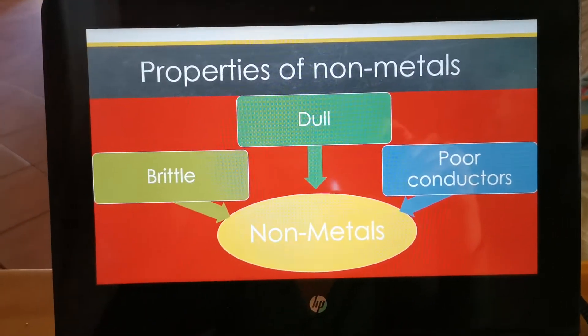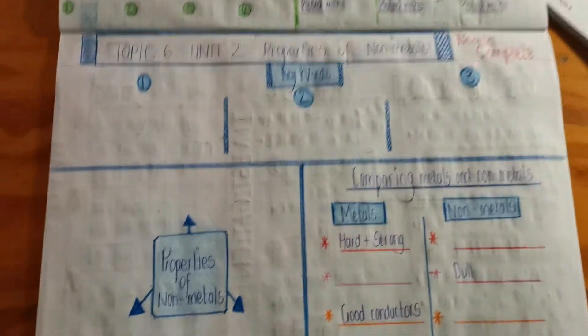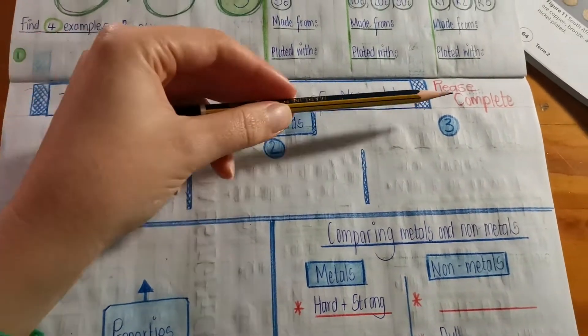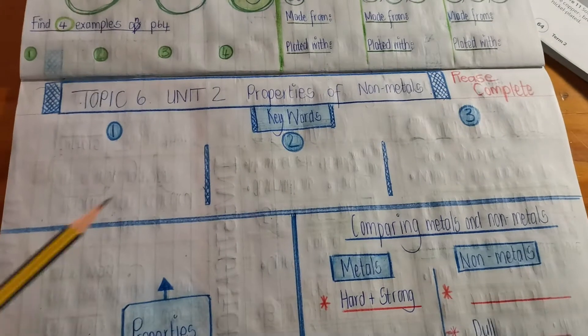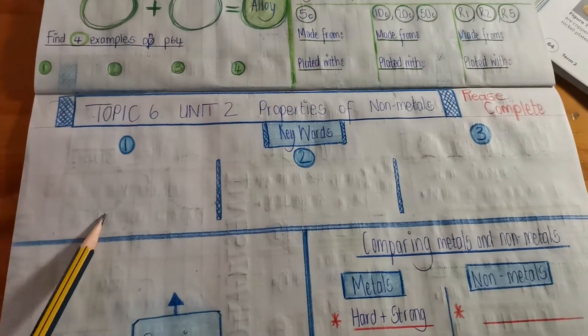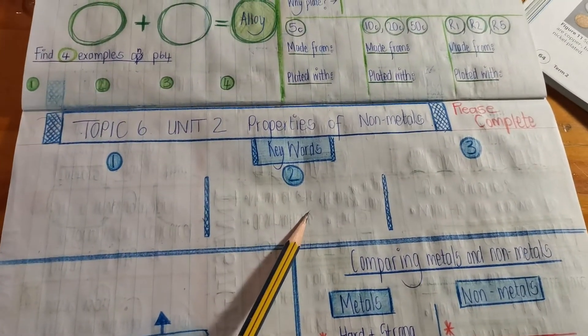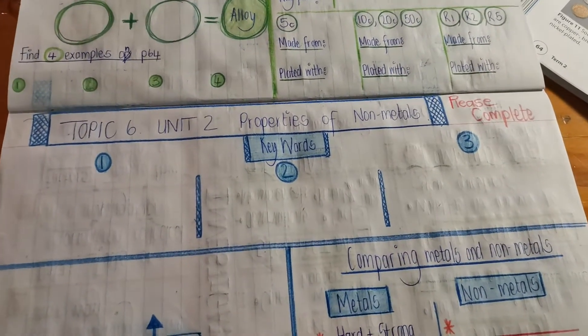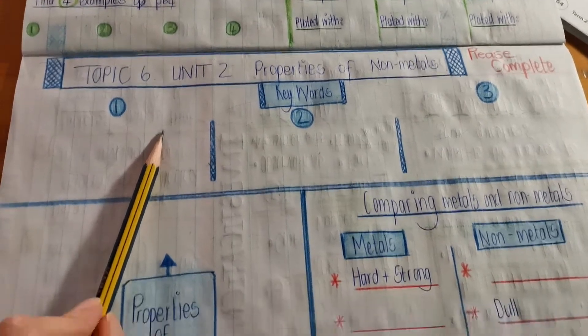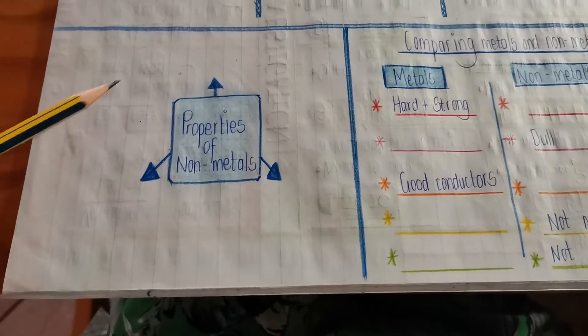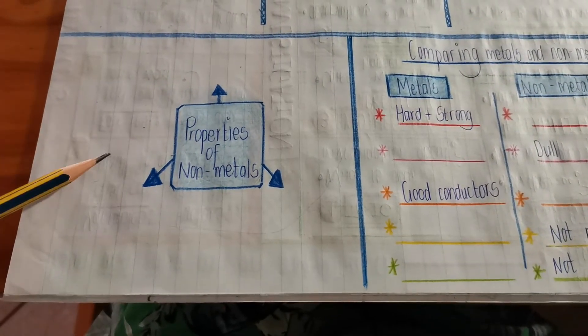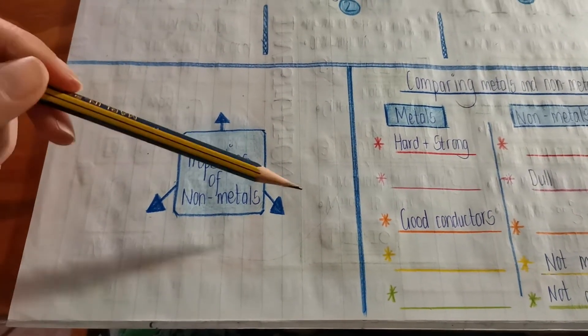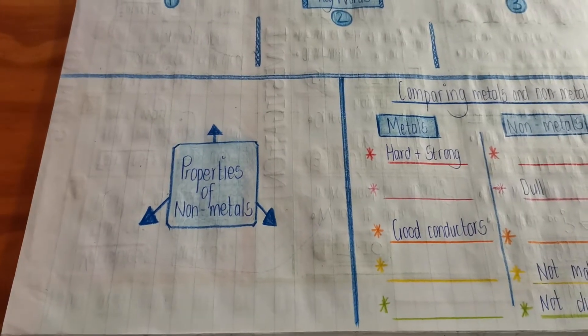So, you had to make a summary in your book. And I gave you an example. Topic 6, Unit 2, Properties of Metals. I asked you to please complete. You had to do your three keywords. Brittle. What was the others? Brittle, Polymer, Ceramics. So, that was your keyword. So, you had to complete your keyword section. Then you had to give me the three properties of metals. So, we have brittle. We have dull. And we have poor conductors. Very easy.